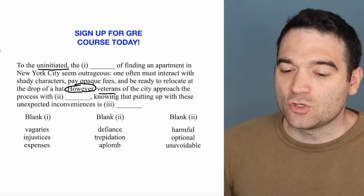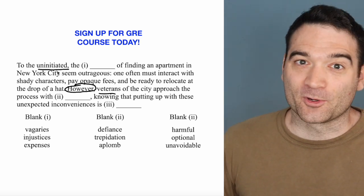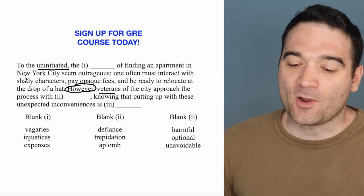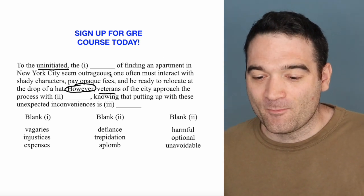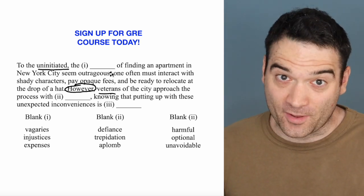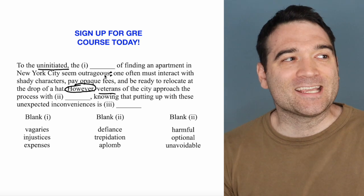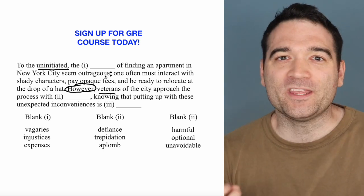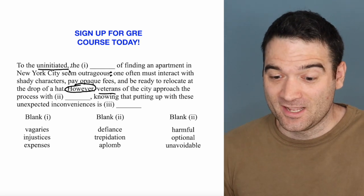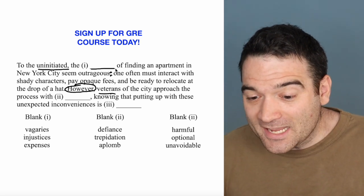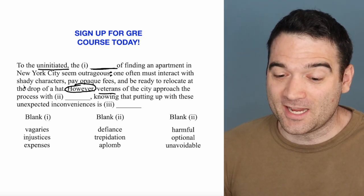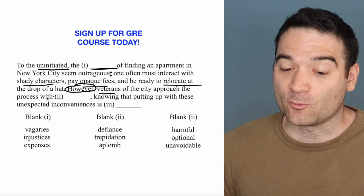Let's focus on the first part: 'To the uninitiated' — these new people coming to New York City with a fantastical idea about what it's going to be like — 'the blanks of finding an apartment seem outrageous.' And we have a colon. A colon is probably the most important piece of punctuation in the vocab section, because it explains, gives an example, elaborates, or defines what was just said. So the blanks are explained by: interacting with shady characters, paying opaque fees, and being ready to relocate at the drop of a hat.